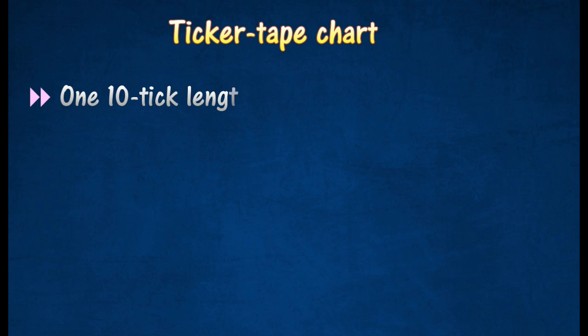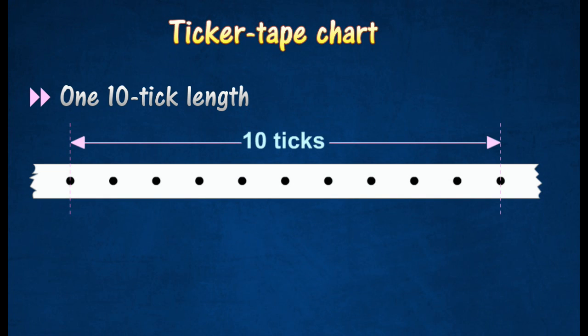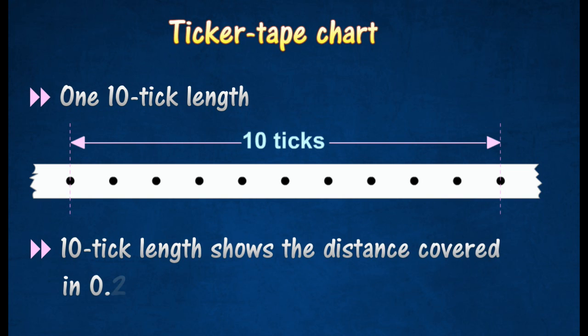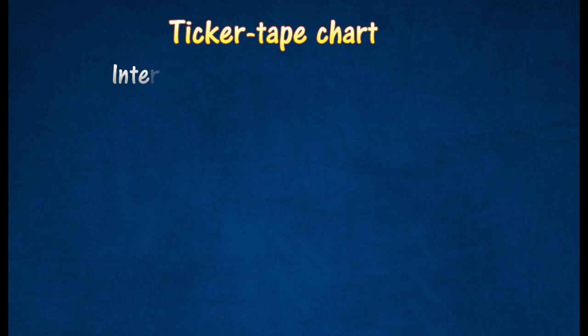Ticker tape charts are usually constructed with 10-tick lengths. Each 10-tick length shows the distance covered in 0.2 second, and is therefore a measure of the average velocity during the time interval of 0.2 seconds. The shape of the ticker tape chart shows how the velocity varies at successive time intervals.